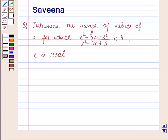Hello and welcome to the session. In this session we will discuss a question which says: determine the range of values of x for which x squared minus 3x plus 24, whole upon x squared minus 3x plus 3, is less than 4, where x is real.